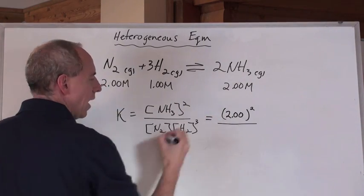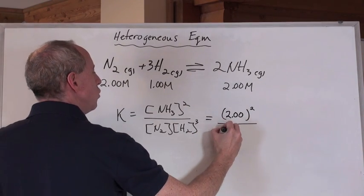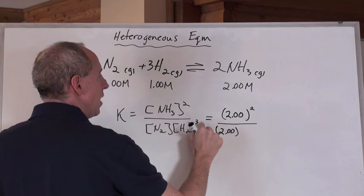And don't forget, chem guy. Yeah, that's right. Don't forget. Yeah, cube that. And then that's going to be 2.00, which is the concentration of the NH2, and the concentration of the H2 was 1.00 moles per meter, but cubed.